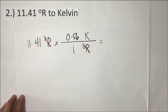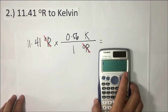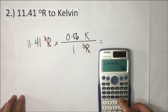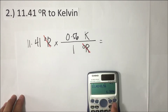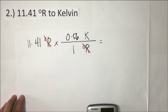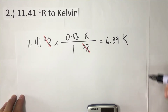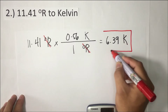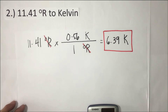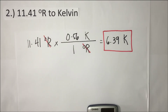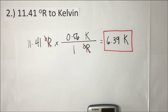11.41 multiplied by 0.56 divided by 1. We don't need to divide since the denominator is 1. The answer is 6.39 Kelvin. And that's how we convert from degrees Rankine to Kelvin.